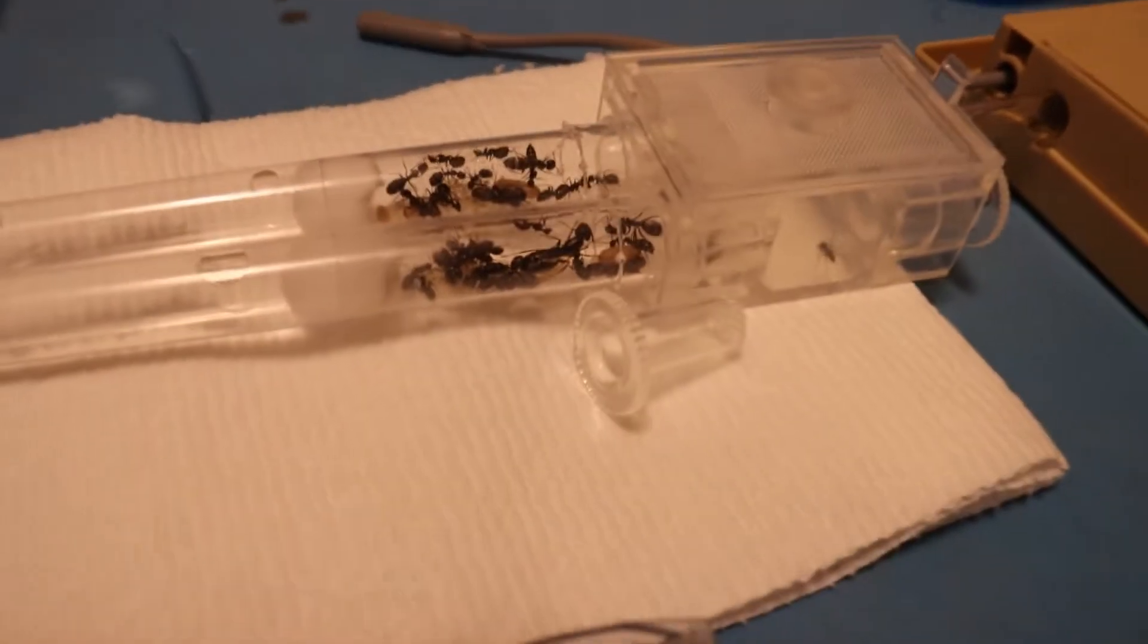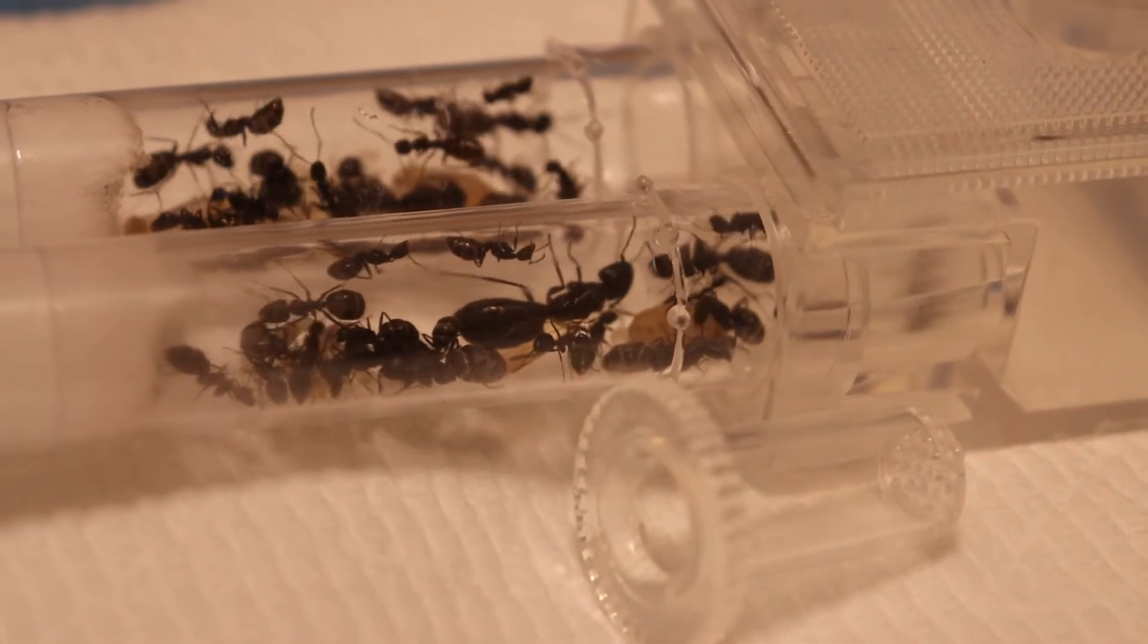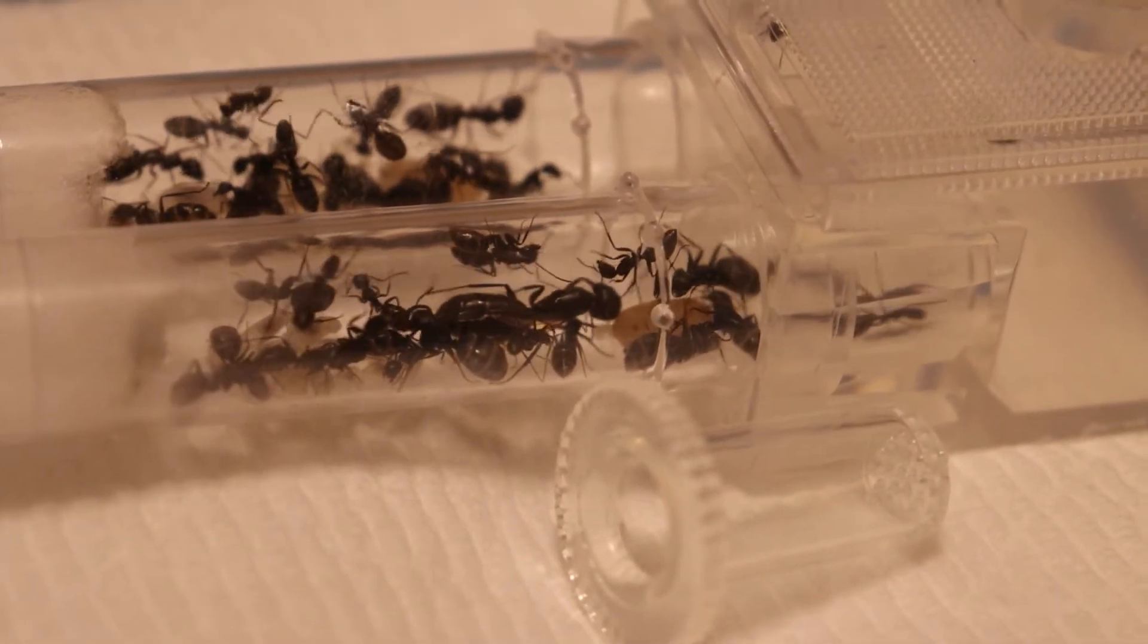So they all ended up moving directly into where they used to feed. They're in the fresh water tube right there with the queen. And on the other side, they're in the sugar water tube.